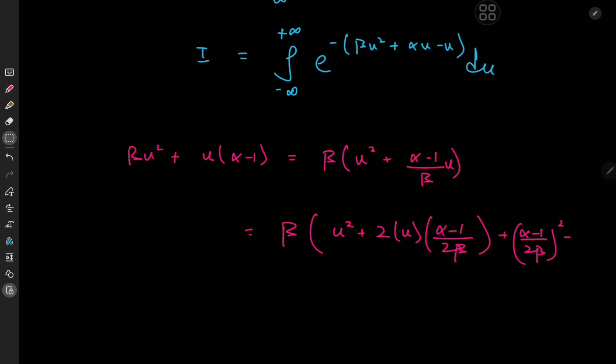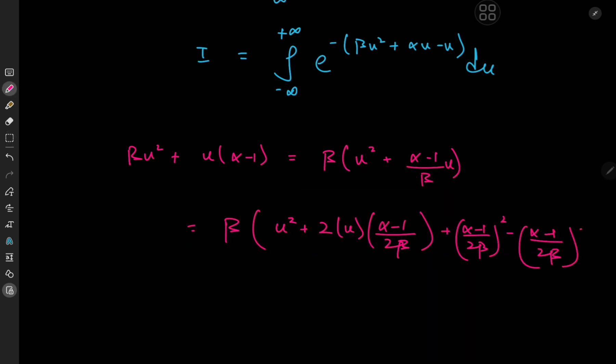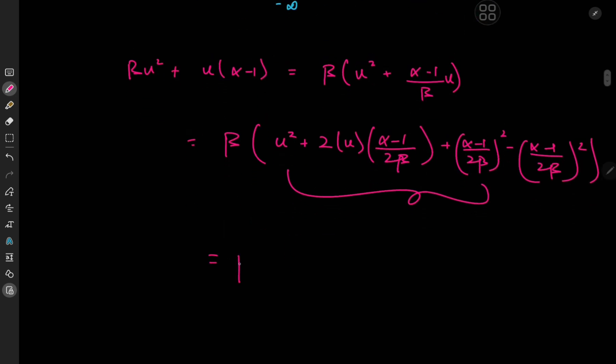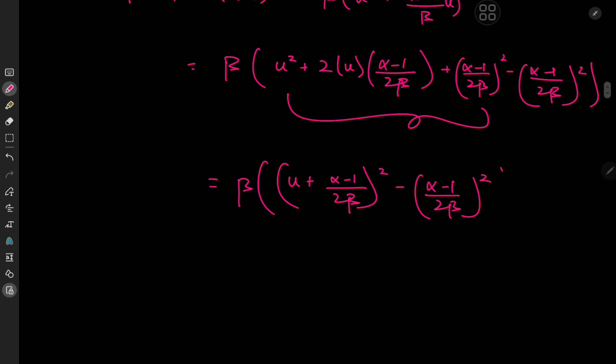Terribly sorry about that, need more writing space. And that means we're closer to a solution, of course. So all of this is compressed into the whole square. So we have beta times u plus alpha minus 1 divided by 2b squared, minus alpha minus 1 divided by 2b squared.